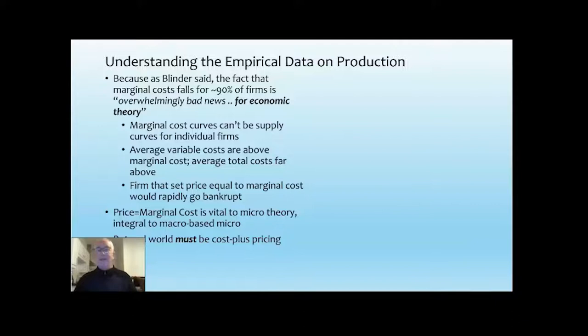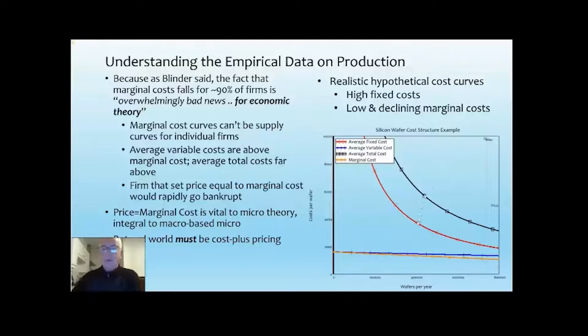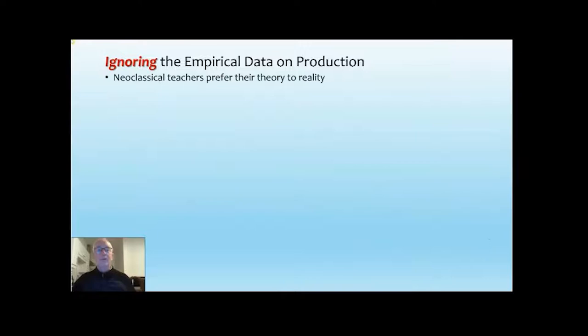The real world shows the only way firms can make a profit is to have cost-plus pricing. They work out their total costs, put a markup above that, and compete to get as much of the market as they can at that markup level. What a real cost structure looks like is high fixed costs and low, declining marginal costs. For example, in a silicon wafer firm, extremely high fixed costs fall in a rectangular hyperbola per unit, with declining variable costs — the only way to make a profit is to price above average cost per unit. If you priced at marginal cost, you'd lose money per unit and go bankrupt in no time.